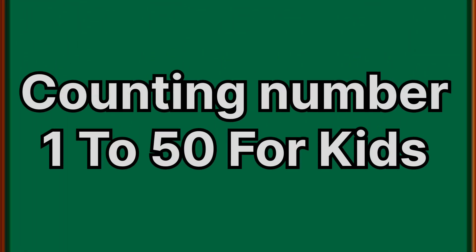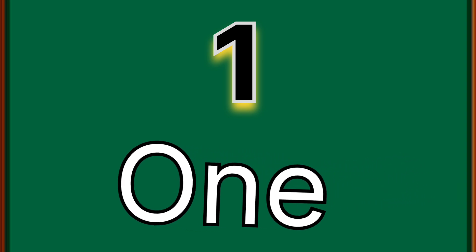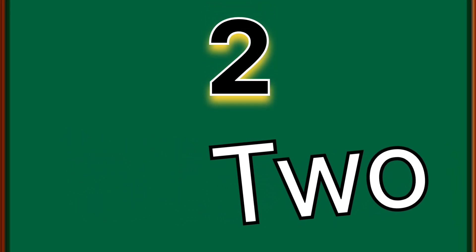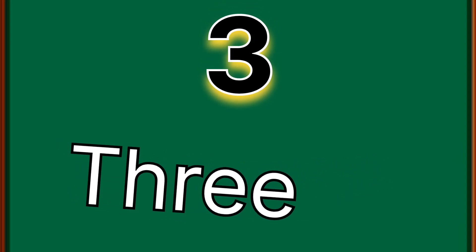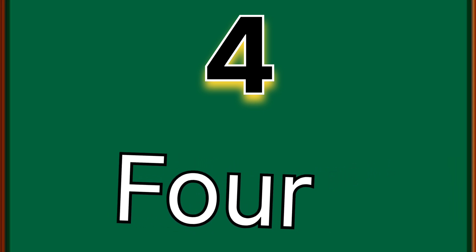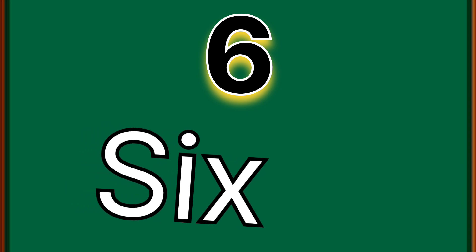Counting numbers 1 to 50 for kids. One — O N E — 1. Repeat: O N E — 1. Two — T W O — 2. Repeat: T W O — 2. Three — T H R double E — 3. Repeat: T H R double E — 3. Four — F O U R — 4. Repeat: F O U R — 4. Five — F I V E — 5. Repeat: F I V E — 5. Six — S I X — 6. Repeat: S I X — 6.